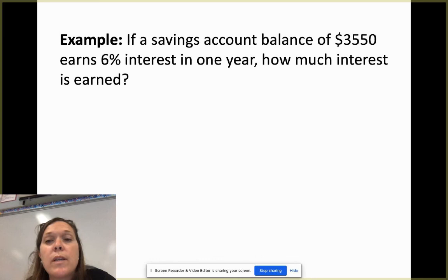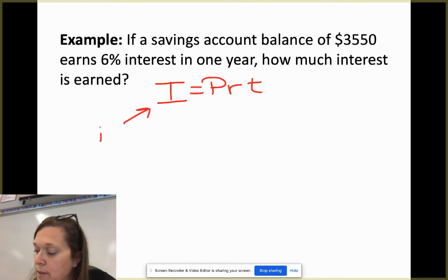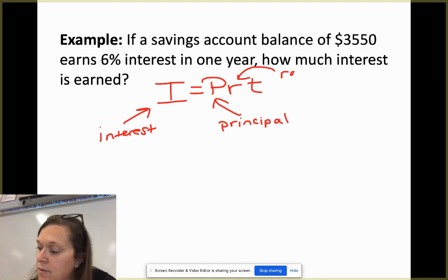Example number two. If a savings account balance of $3,550 earns 6% interest in one year, how much interest is earned? So our first formula that we used in these word problems was the distance. Distance equals rate times time. Here's a second formula that you should know, and jot this down and put a big star around it on your notes, is your simple interest formula. I equals PRT, where I represents the interest. P represents your principal, so how much money you're starting out with. R is your rate, always as a decimal. And T is your time, which is usually in years.